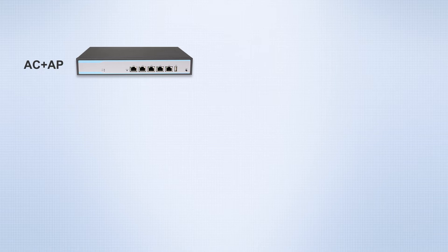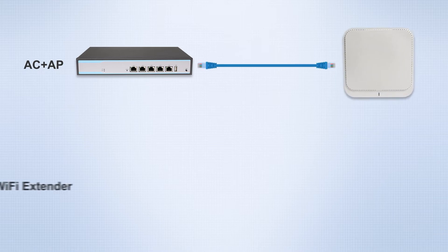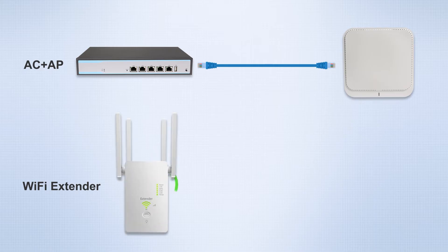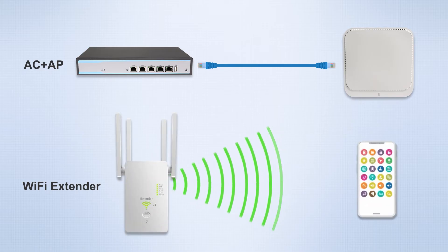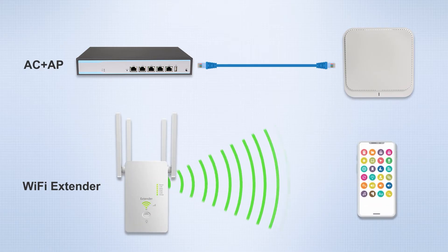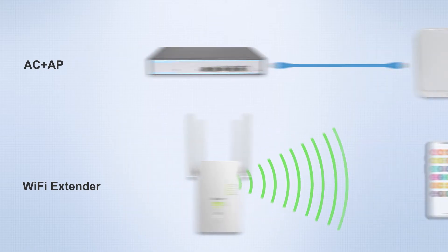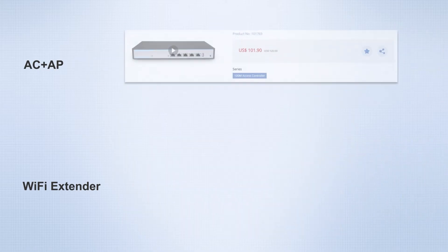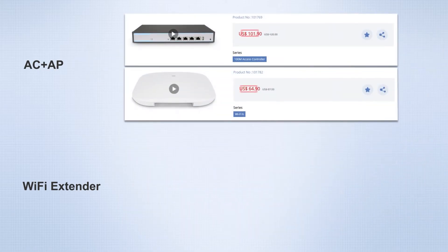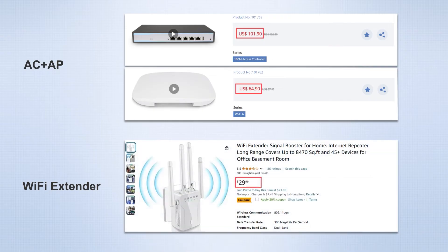However, compared to the cumbersome wiring required for an AC plus AP setup, the biggest advantage of Wi-Fi extenders is their wireless connection and easy installation, making them very suitable for families who don't have wiring in each room. And compared to the high price of an AC plus AP combination, a Wi-Fi extender can solve the problem for only a few dozen dollars.